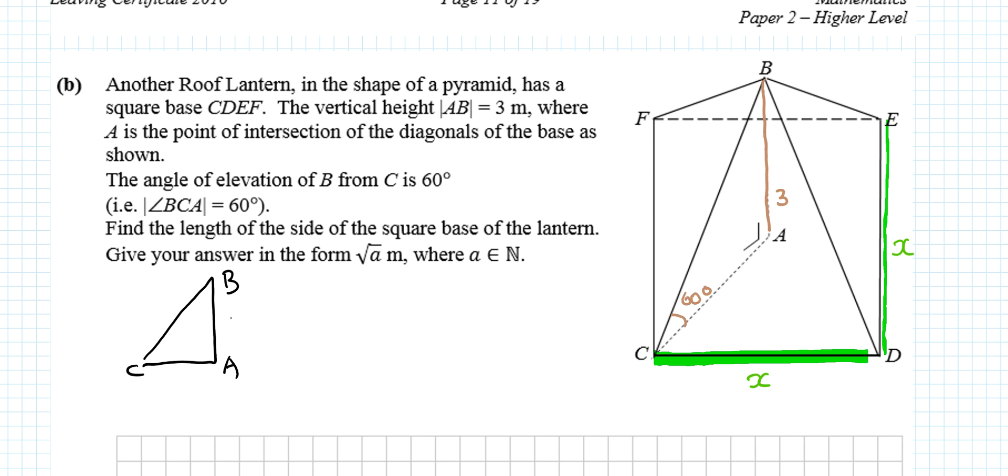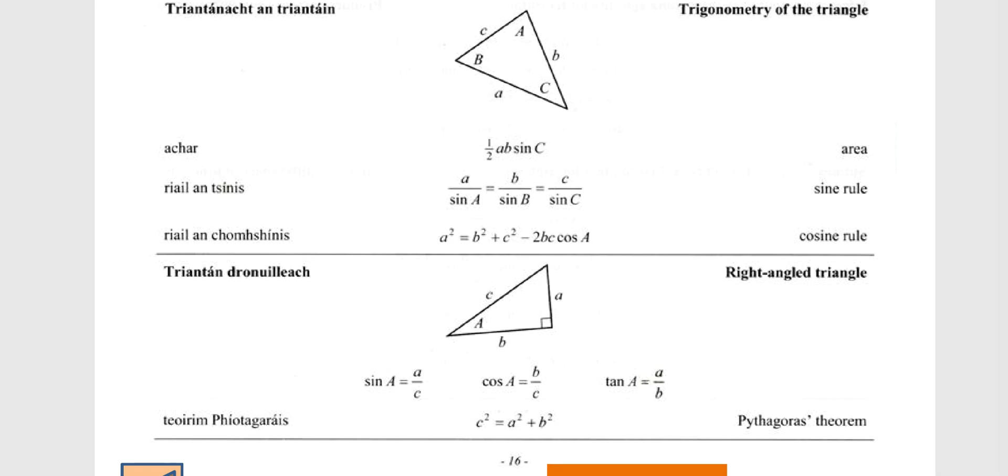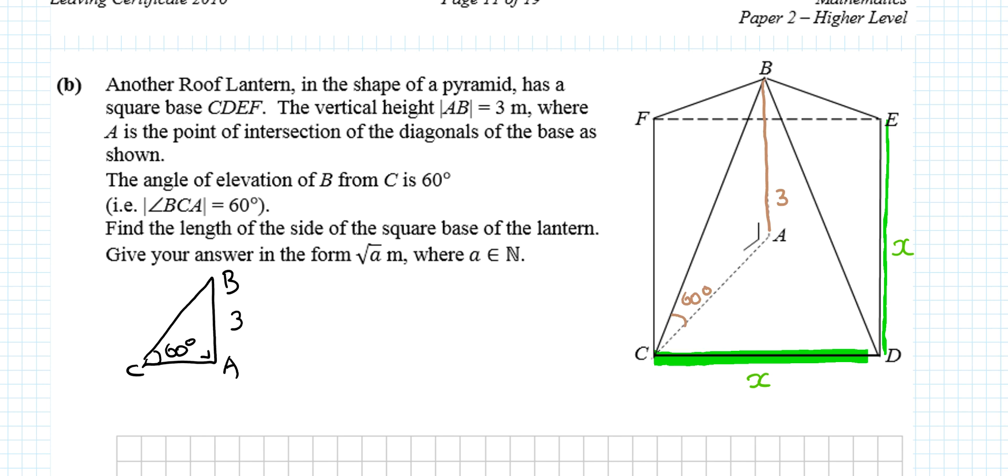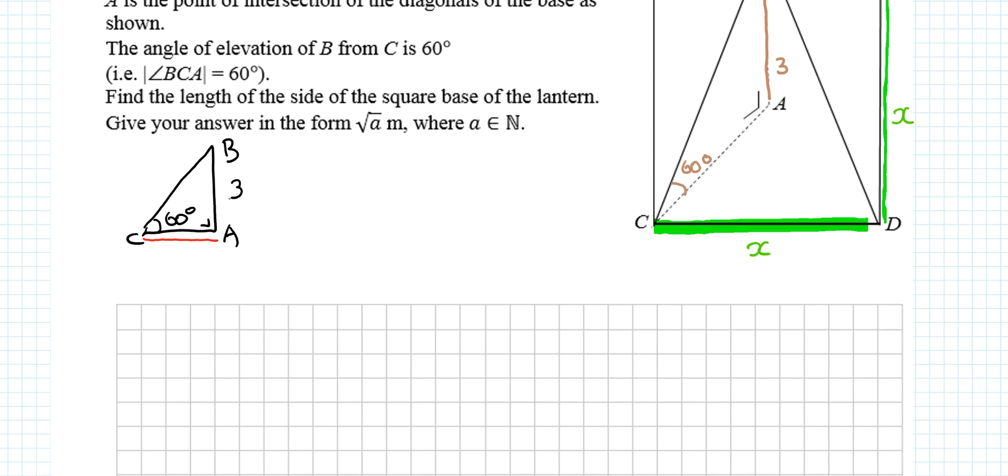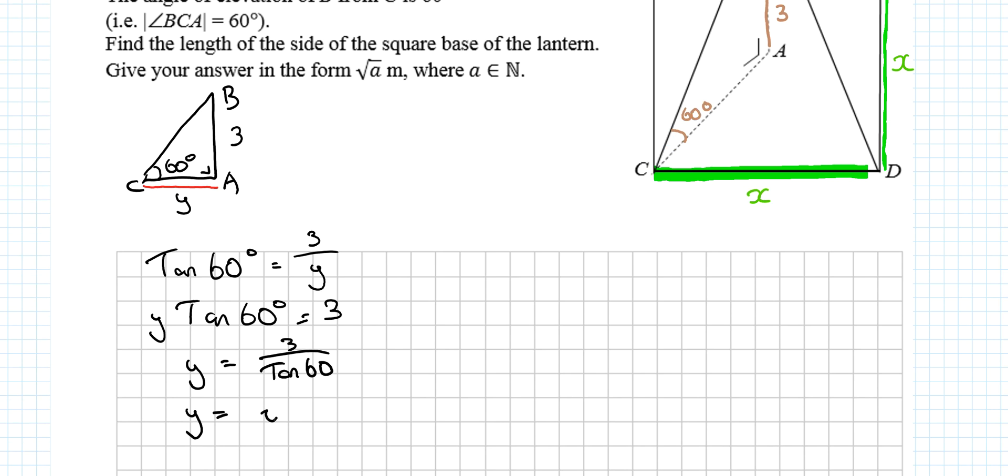Looking at this triangle CBA, 60 degrees - it's a right angle triangle. The only things we can use are Sokotoa and Pythagoras. Can we use Pythagoras? No. If we found this length, it could become very useful. This is the adjacent and that's the opposite. Using tan: tan 60 equals opposite over adjacent. Let's call it Y. Tan 60 equals 3 over Y. Y equals 3 divided by tan 60. Make sure your calculator is in degrees. Y equals root 3.